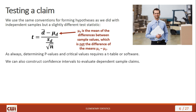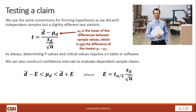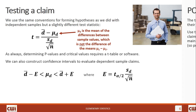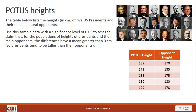We can also construct confidence intervals to evaluate dependent sample claims. The margin of error E equals the critical t-value multiplied by S_D over the square root of n. Let's look at an example problem to illustrate how this works.